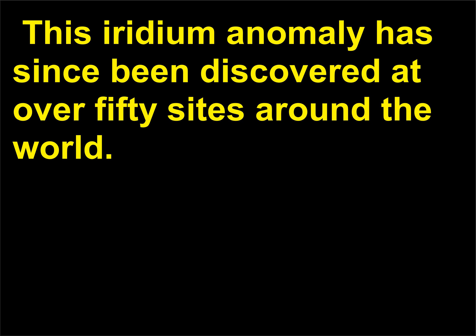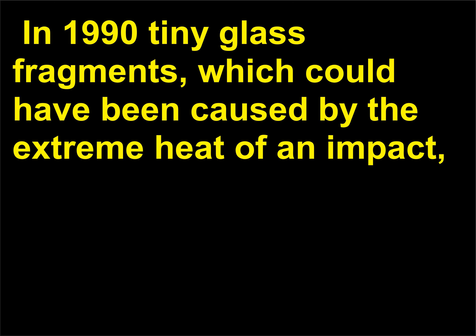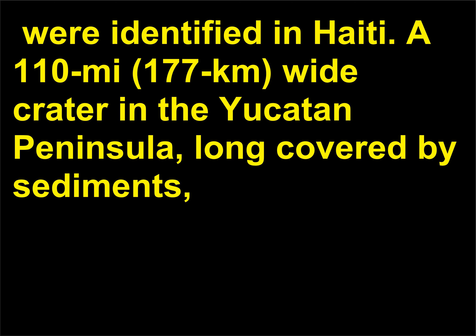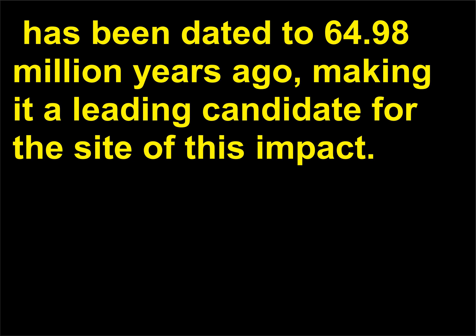This iridium anomaly has since been discovered at over 50 sites around the world. In 1990 tiny glass fragments, which could have been caused by the extreme heat of an impact, were identified in Haiti. A 110-mile (177-kilometer) wide crater in the Yucatan Peninsula, long covered by sediments, has been dated to 64.98 million years ago, making it a leading candidate for the site of this impact.